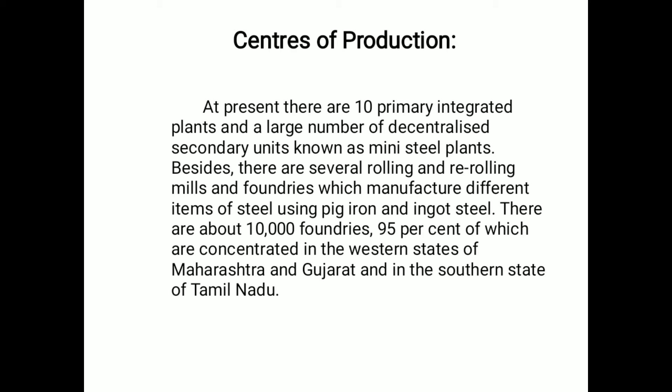As for centers of production, at present there are 10 primary integrated plants and a large number of decentralized secondary units known as mini steel plants. Besides these, there are several rolling and re-rolling mills and foundries which manufacture different items of steel using pig iron and ingot steel. There are about 10,000 foundries, 95 percent of which are concentrated in the western states of Maharashtra and Gujarat, and in the southern state of Tamil Nadu.